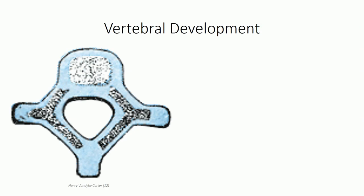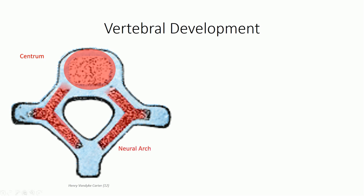During embryological development, bone initially forms as cartilaginous models that later harden through ossification, resulting in mature bone. Vertebral ossification starts around eight weeks of age at three separate primary ossification centers. One center, known as the centrum, is found in the central core of the vertebral body. The other two form bilaterally in each lamina. As they grow, the three centers ultimately fuse, completing ossification of each vertebra. Posterior fusion of the lamina occurs during the first year of life, while fusion of the arch with the body does not occur until the third year, at a point known as the neurocentral joint. By the time a child turns four, the body and arch are fully fused, forming a complete vertebra with no joint space.